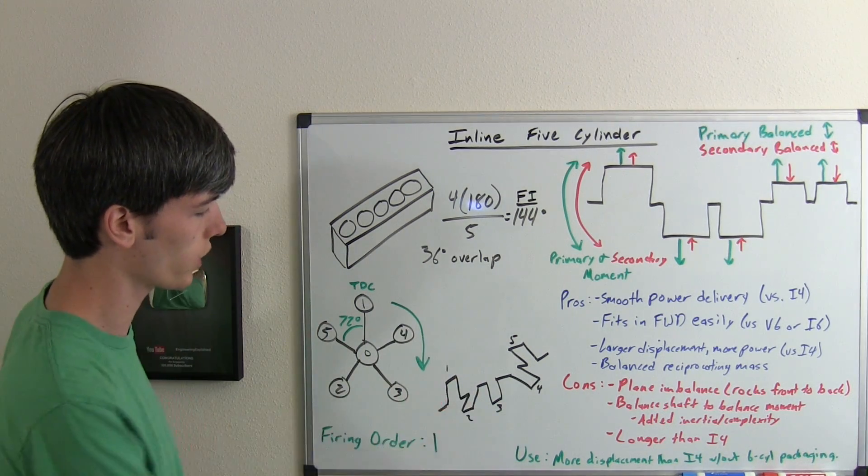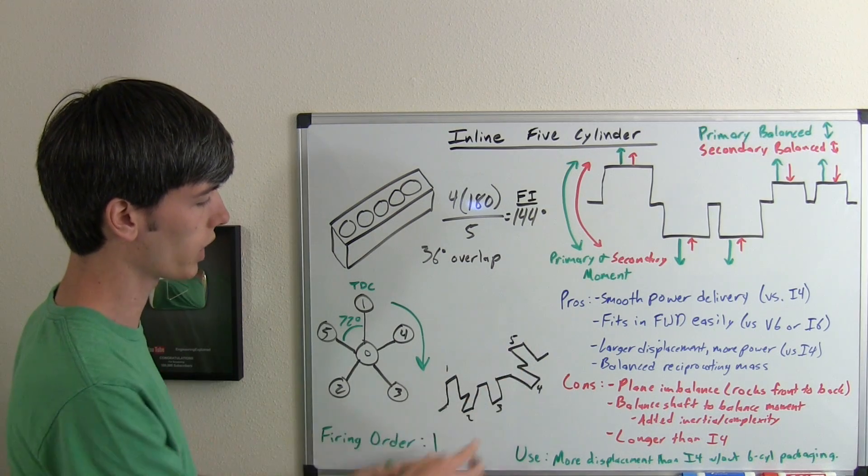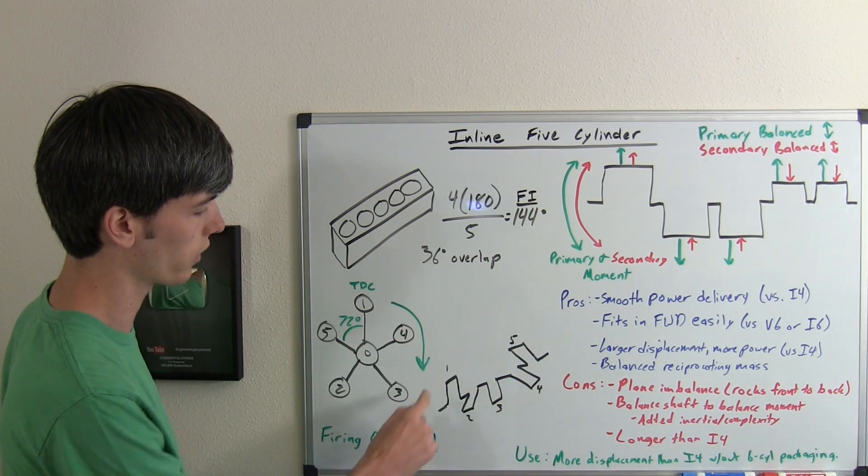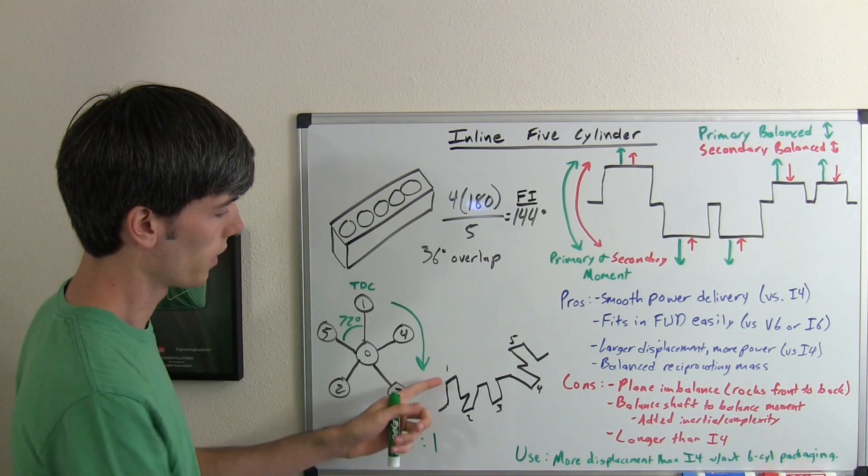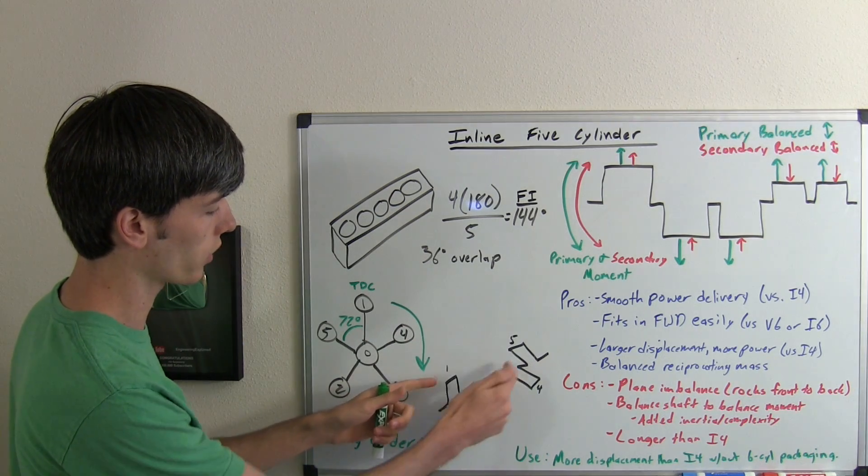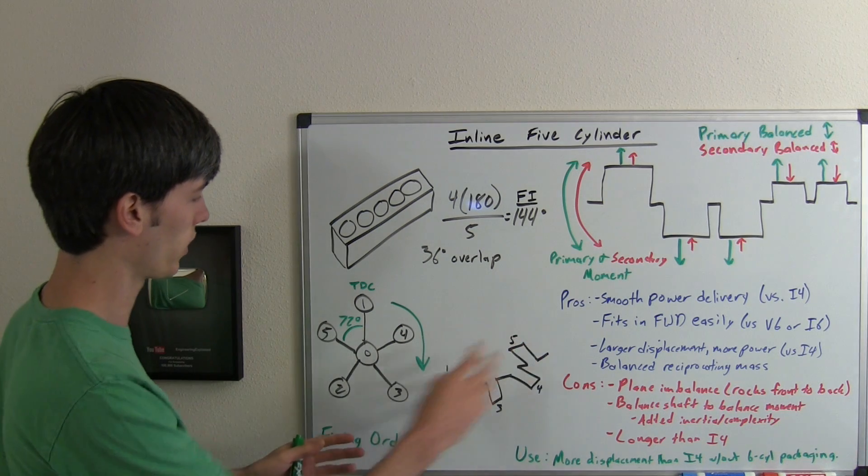Let's take a look at the crankshaft, which I've drawn here, basically giving you a look at what this looks like. Where the different connecting rods are going to connect, and where the pistons are going to be in this scenario.